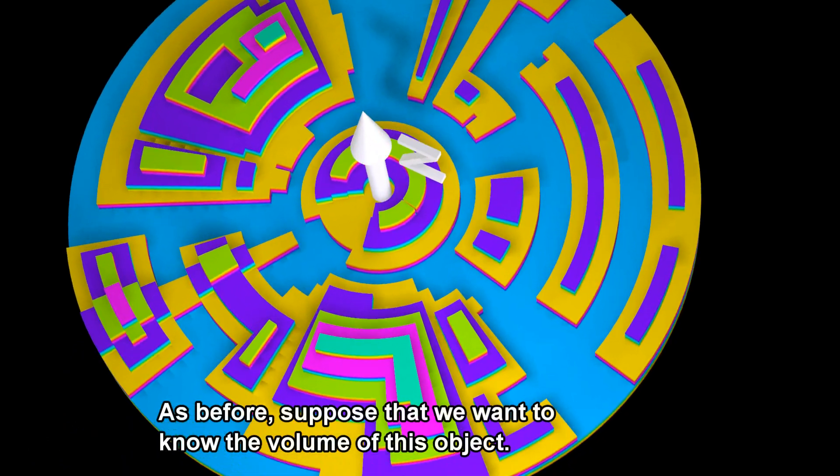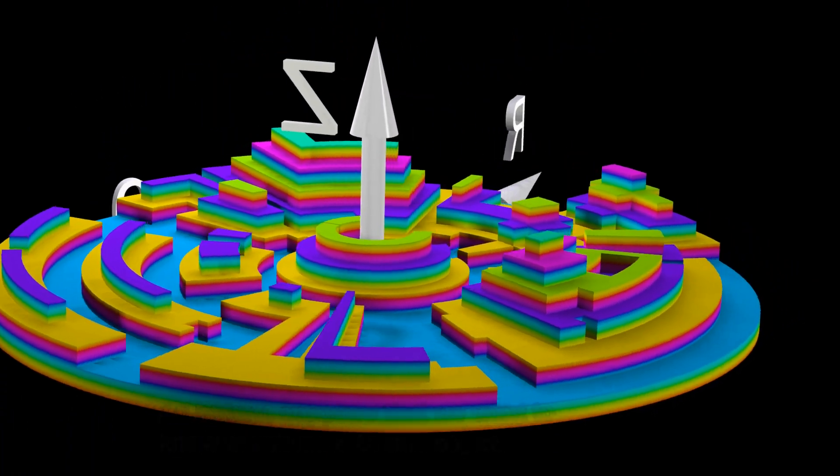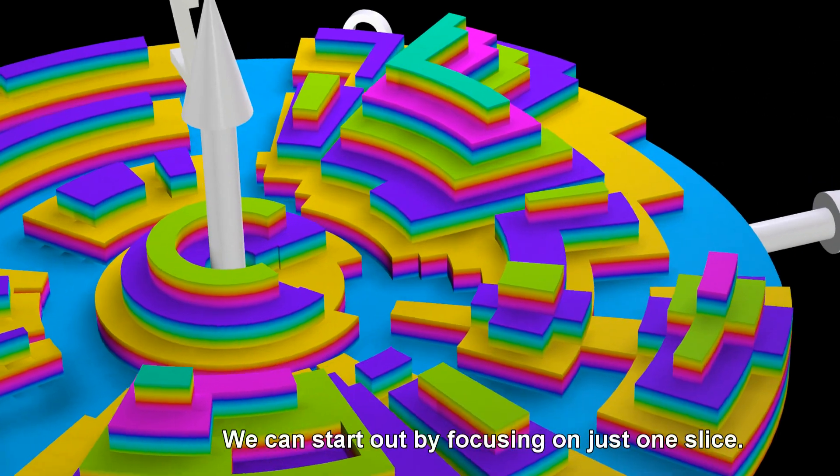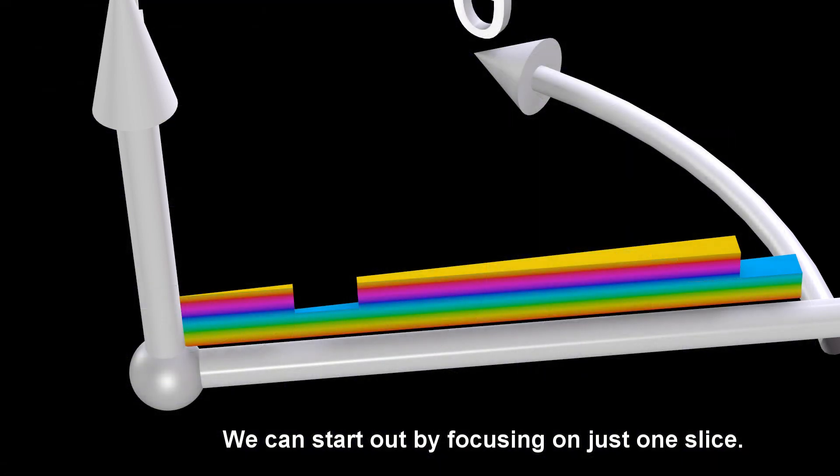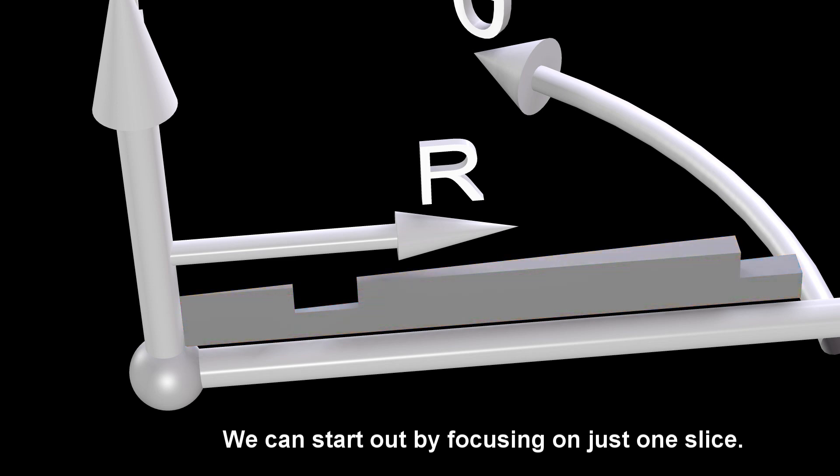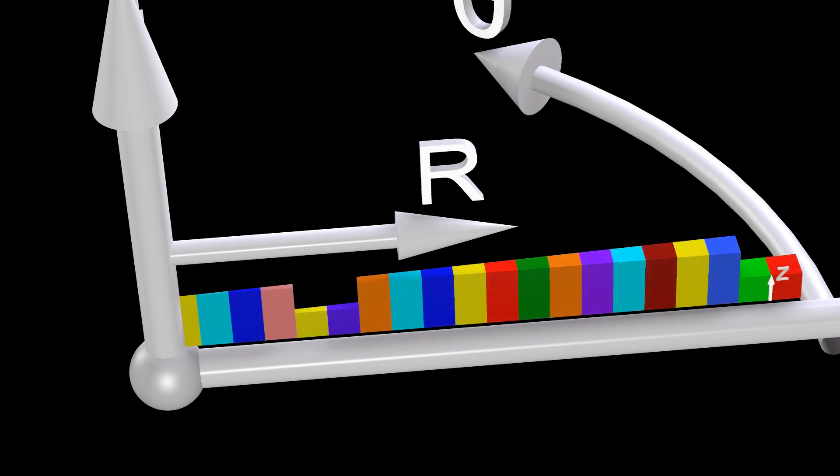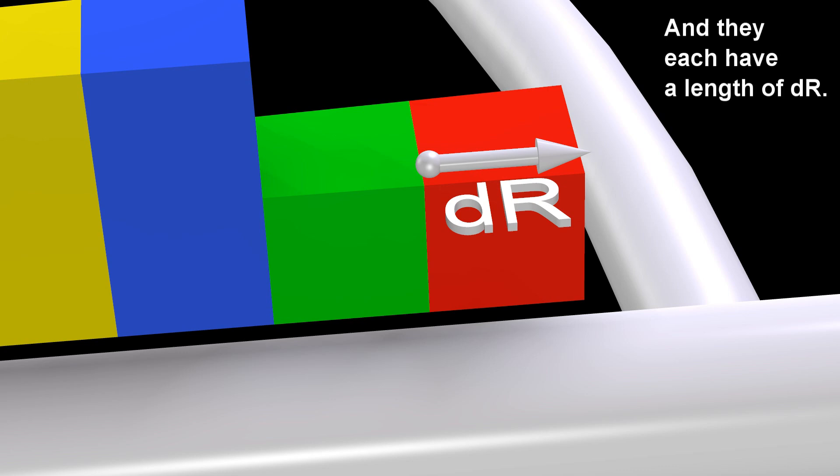As before, suppose that we want to know the volume of this object. We can start out by focusing on just one slice. Each of these sections have a height of Z, and they each have a length of DR.